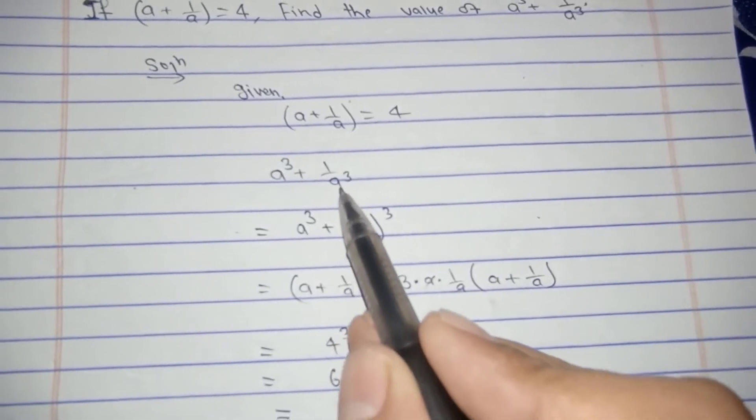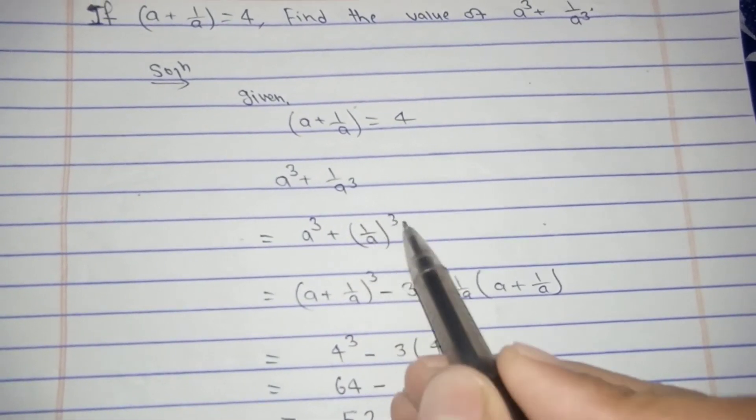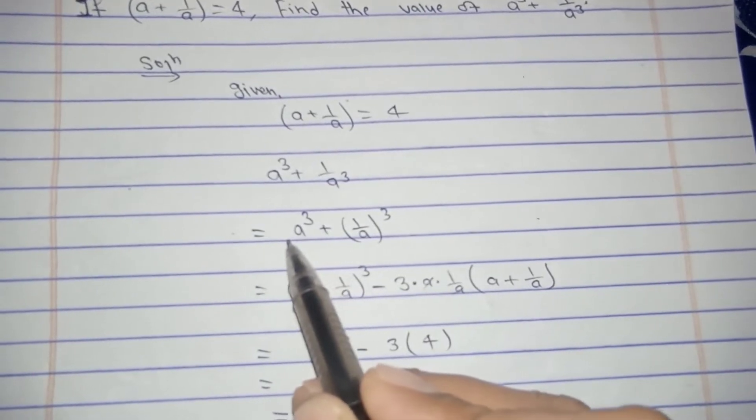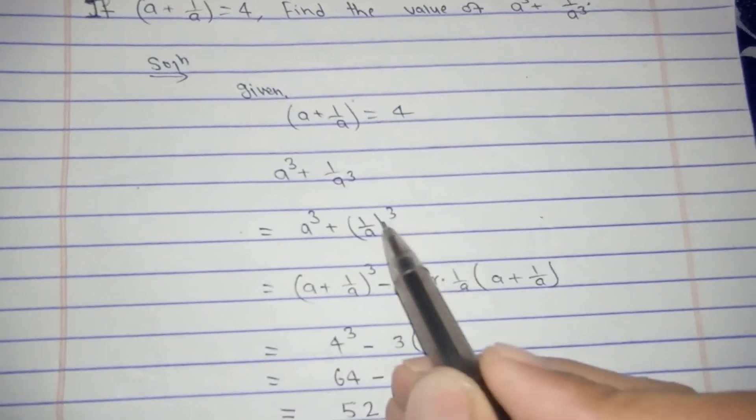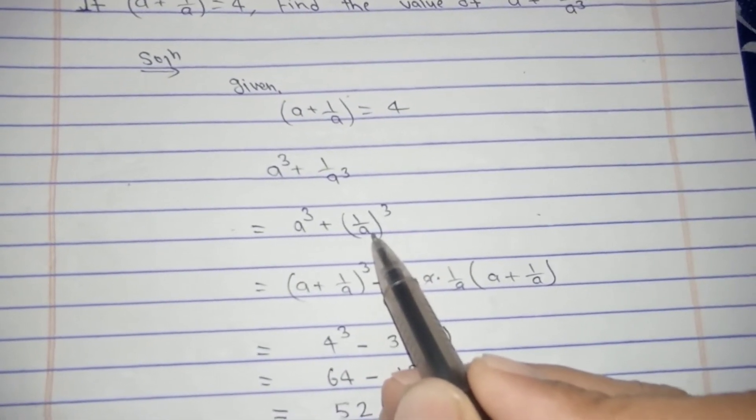And here is one by a cube, so we can also write here one by a whole cube. If we do so, this a could be considered as a, and one by a could be considered as b.